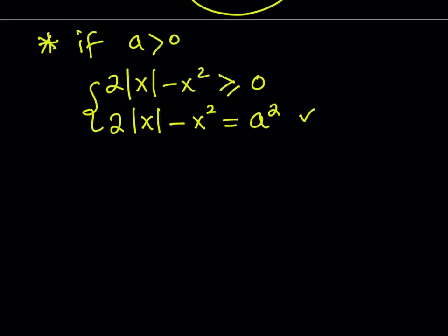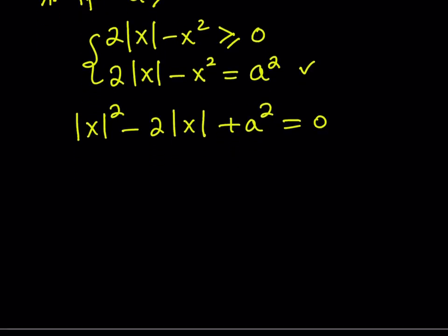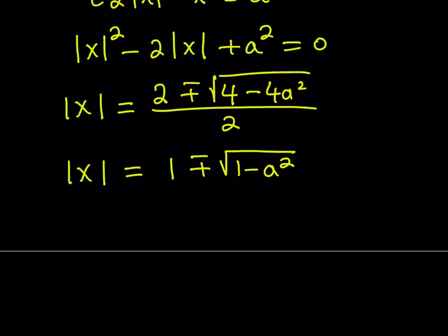To solve this as a quadratic, I put everything on the right-hand side and write x squared as the absolute value of x squared, giving: absolute value of x squared minus two times the absolute value of x plus a squared equals zero. Setting u equal to absolute value of x and applying the quadratic formula gives: absolute value of x equals one plus or minus the square root of one minus a squared.